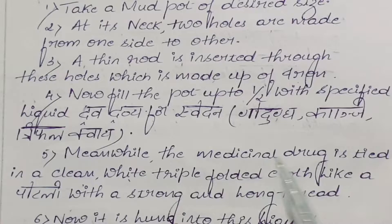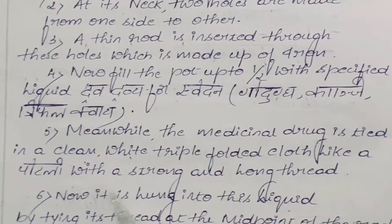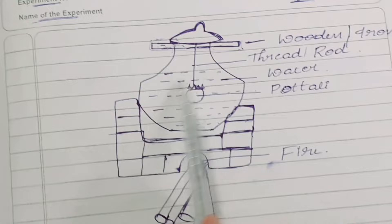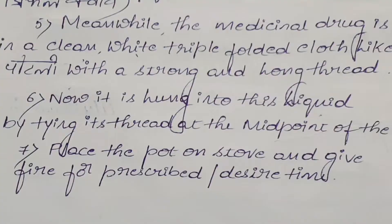Meanwhile, the medicinal drug is tied in a clean white triple-folded cloth like a potli with strong and long thread. The three-fourths of the pot is filled with the dravadravya, then the medicinal drug is tied in a potli. Now it is hung into this liquid by tying its thread at the midpoint of the rod.